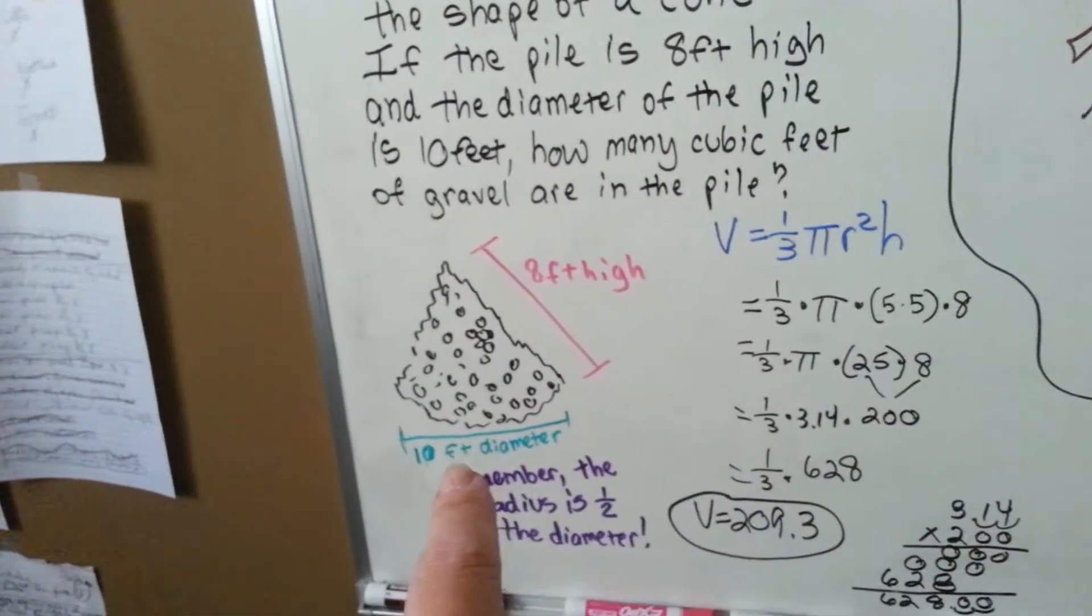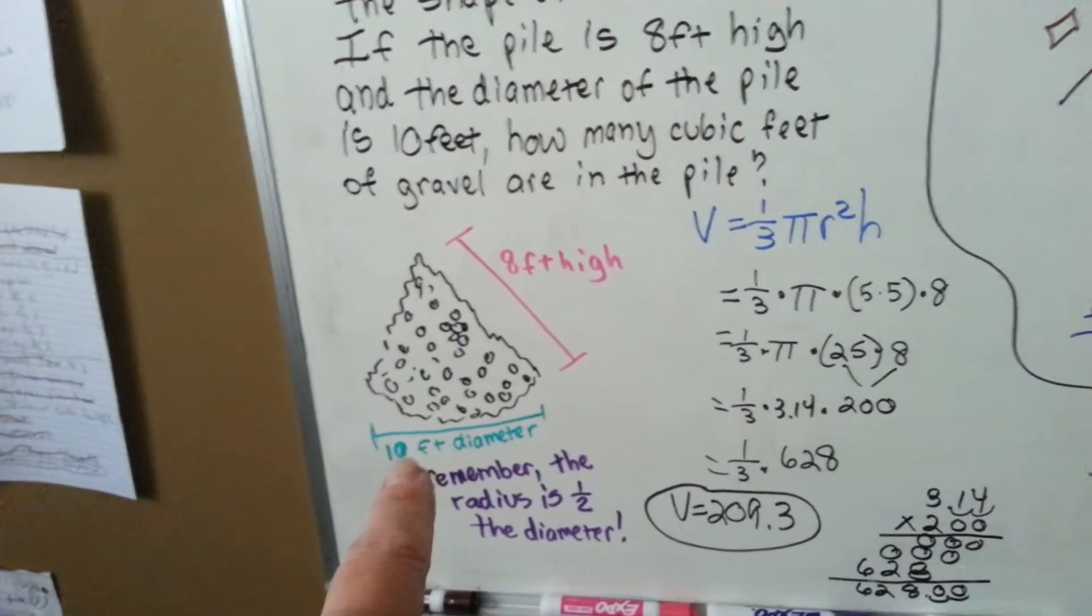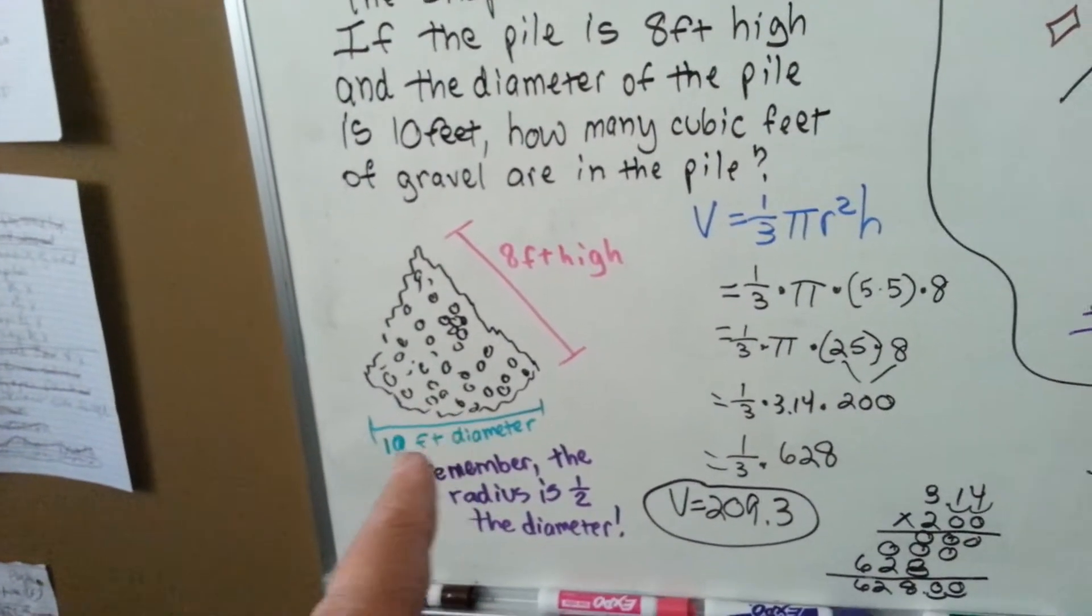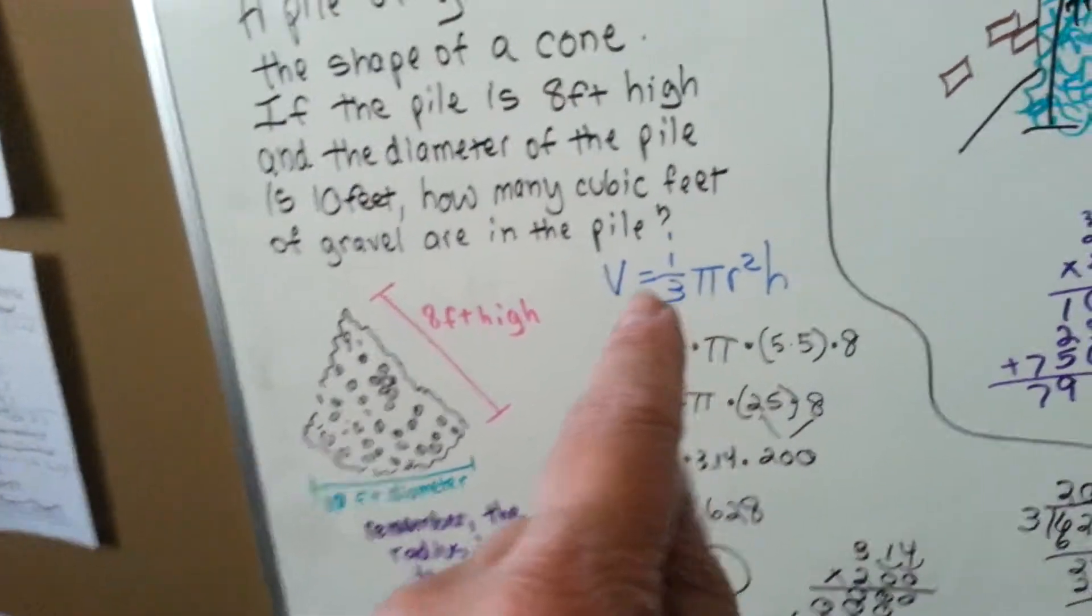So, if we need radius, we have to remember that the radius is half the diameter. If they give you the diameter, just cut it in half. If it's 10, now we need to use 5 as the radius.